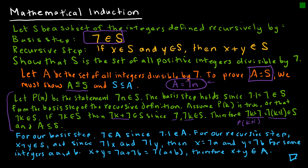Now going in the other direction: the basis step says we're showing that an element in S is going to be in A. We start with the first element of S given in the recursive definition, which is 7, and we know that 7 belongs to A since 7 times 1 belongs to A by the definition of the set A.